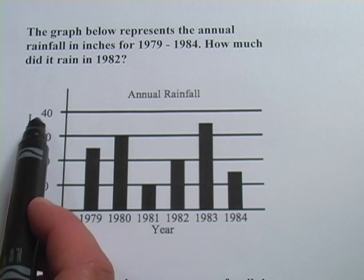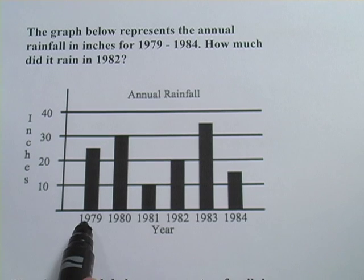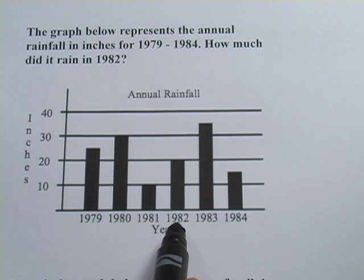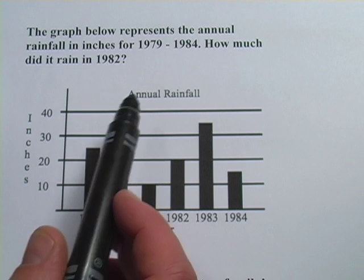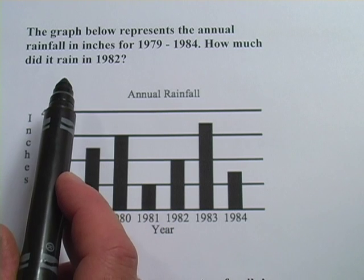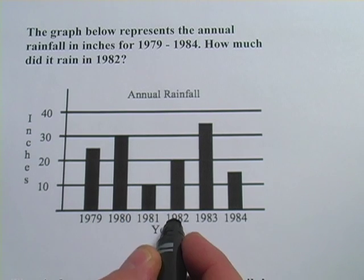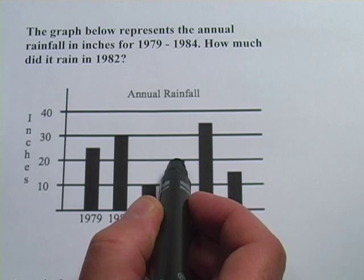We've got values of 10, 20, 30, and 40 on the y-axis. On the bottom we've got the years. So if you want to find how much it rained in 1982, you've got to go to 1982 and then read the bar.